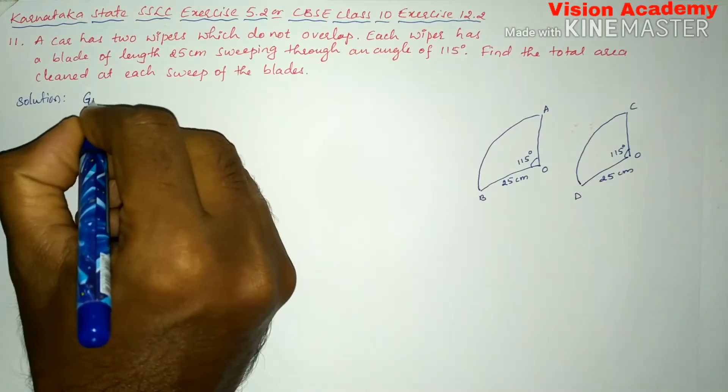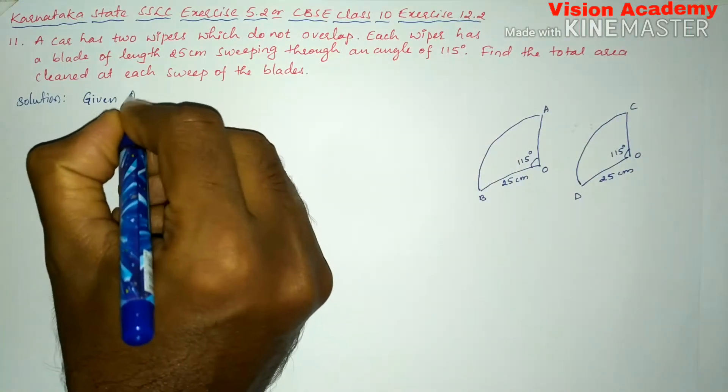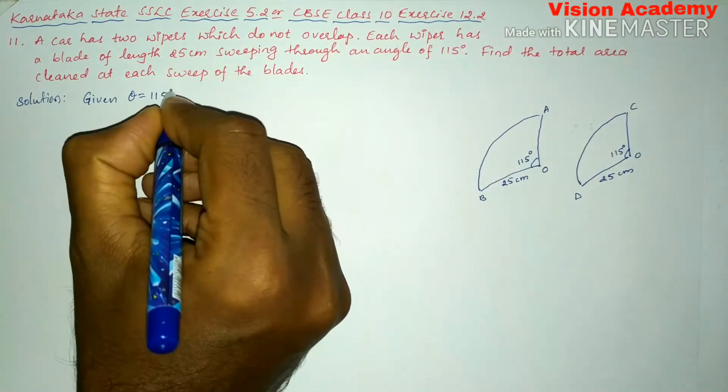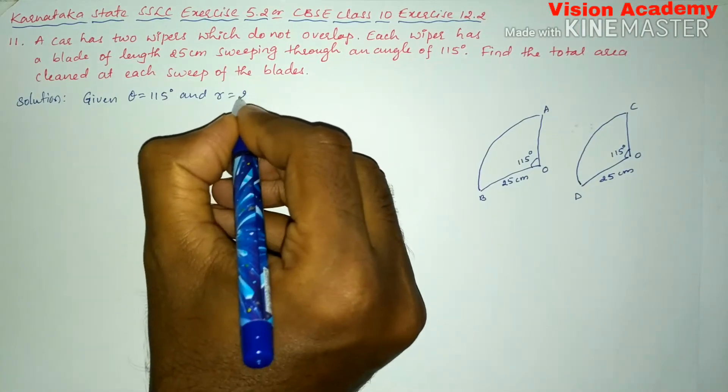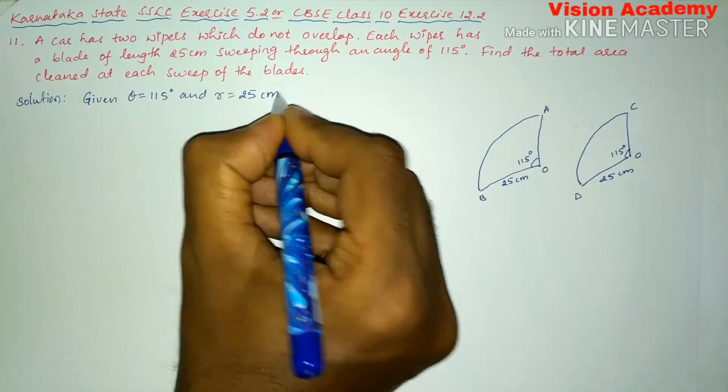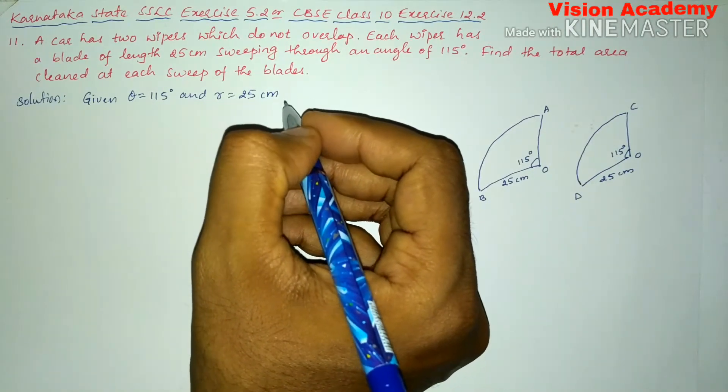Here we will write given in the question: theta is equal to 115 degrees and radius R is equal to 25 cm, that is the length of the blade.